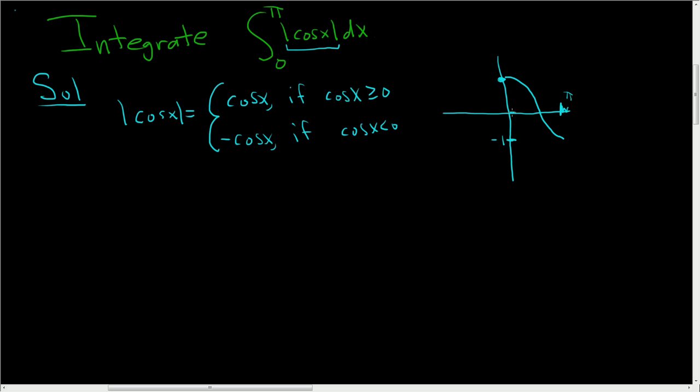All right, it looks like it's going to be greater than or equal to 0 from 0 to pi over 2. And then from pi over 2 to pi, it's going to be less than 0. So this is pi over 2.